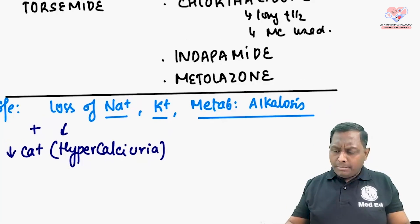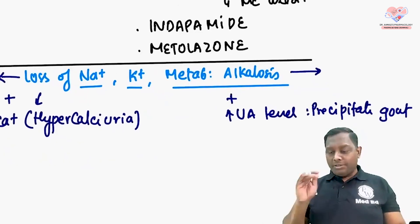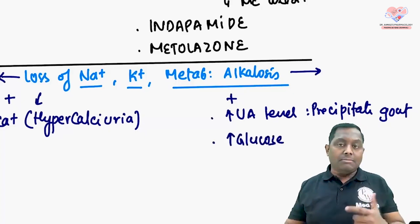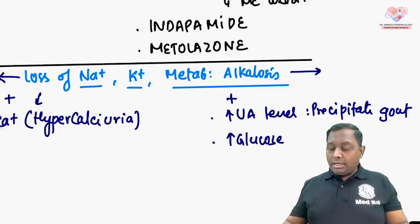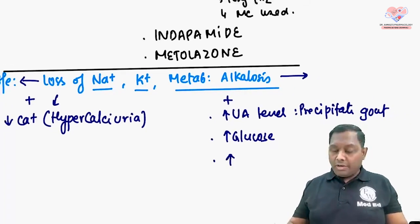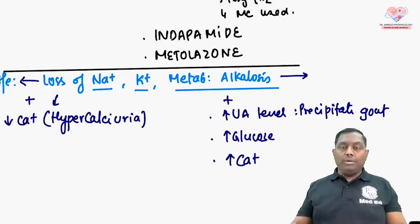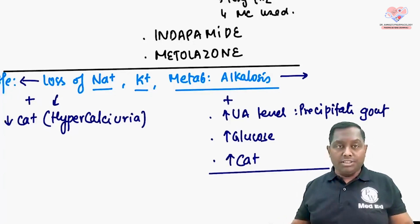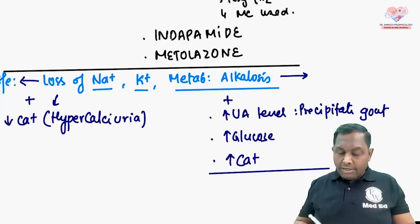Thiazide diuretics can also increase glucose levels, though the risk is notable. Importantly, thiazide diuretics inhibit the loss of calcium, so the level of calcium is higher — they can lead to hypercalcemia, hyperglycemia, and increased uric acid levels.